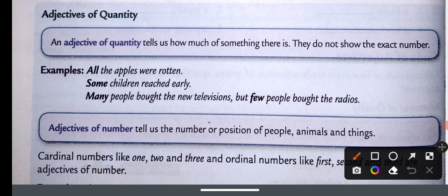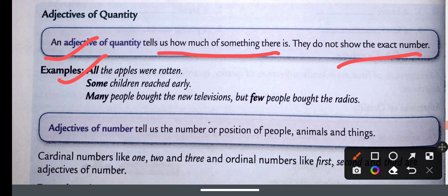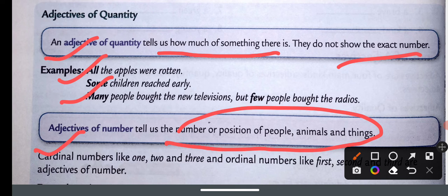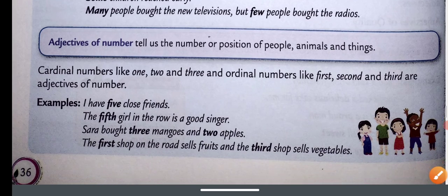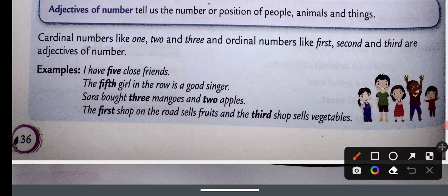Adjective of quantity tells us how much of something there is — for example, 'All the apples were rotten' and 'Some children reached early.' Adjective of number tells us how many — for example, 'twenty sweets.' Numbers are of two types: cardinals (one, two, three) and ordinals (first, second, third).